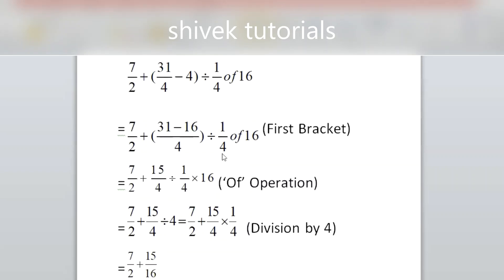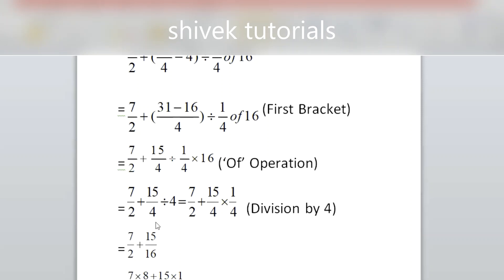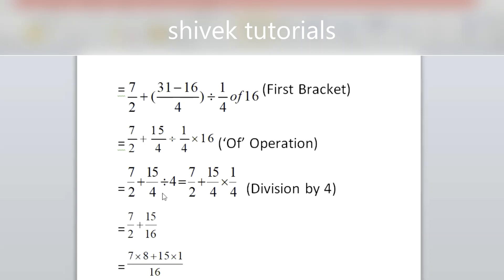After bracket comes off. We solve the off term next. Off means multiplication sign: 1/4 of 16, which is 1/4 into 16 = 4. Again a division sign comes, so we convert division to multiplication. Since 4 has nothing in the denominator, it is 4/1. We take the inverse: 4/1 becomes 1/4. The division sign changes to multiplication. Now we solve: 4 fours are 16, 15 ones are 15, giving 15/16.